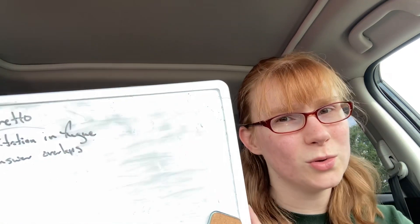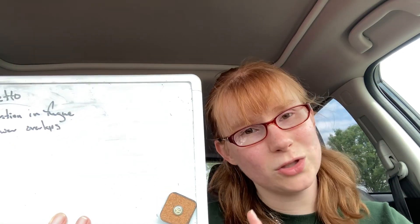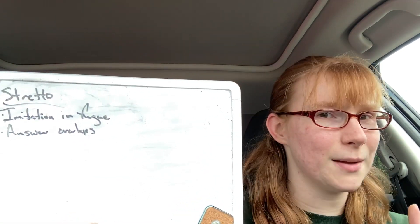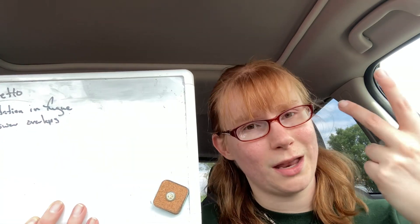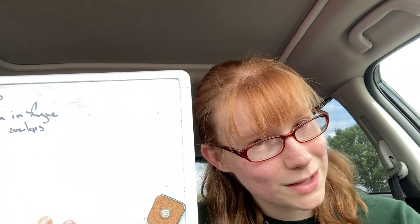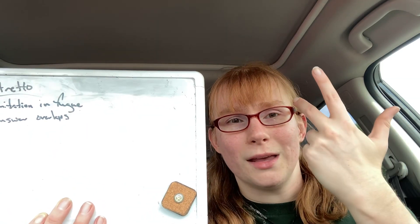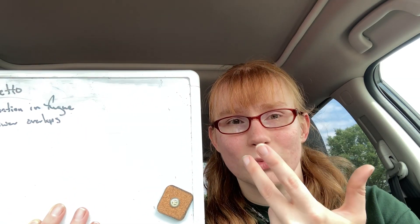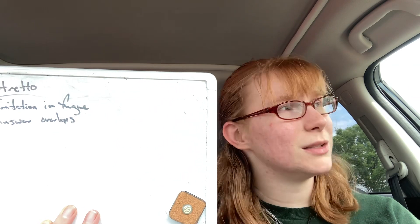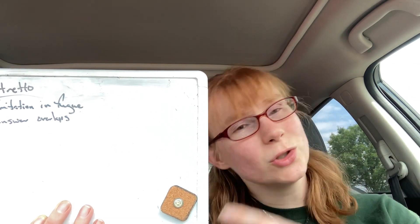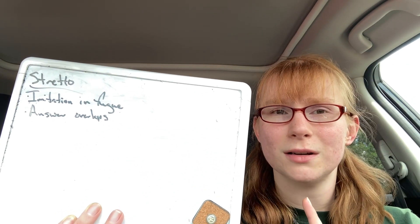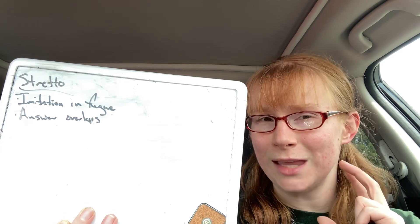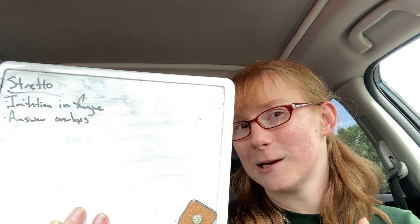In a fugue with Stretto, the answer overlaps because when the subject comes in — and it's normally the Stretto — it would be interrupted by the answer, right near the end.